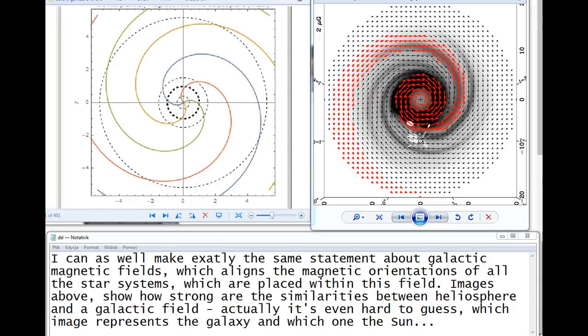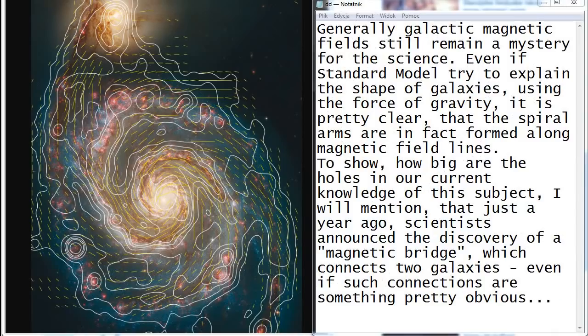I can as well make exactly the same statement about galactic magnetic fields, which align the magnetic orientations of all star systems which are placed within this field. Images above show how strong are the similarities between heliosphere and a galactic field. Actually, it's even hard to guess which image represents the galaxy and which one the sun. Generally, galactic magnetic fields still remain a mystery for the science. Even if standard model tried to explain the shape of galaxies using the force of gravity, it is pretty clear that the spiral arms are in fact formed along magnetic field lines. To show how big are the holes in our current knowledge of this subject, I will mention that just a year ago scientists announced the discovery of a magnetic bridge which connects two galaxies. Even if such connections are something pretty obvious.